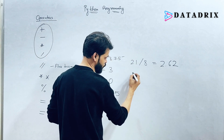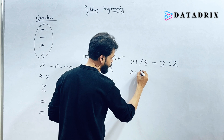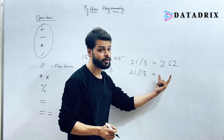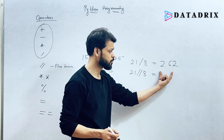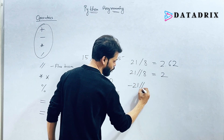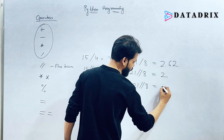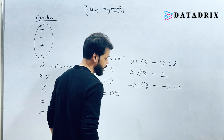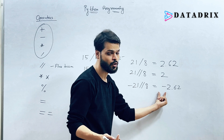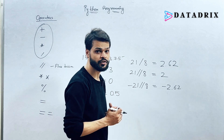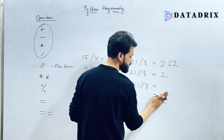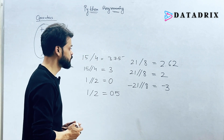For negative numbers with floor division, -21 // 8 gives approximately -2.62. Floor division gives the smallest integer, and between -2 and -3, the smallest integer is -3, because -3 is smaller than -2. So the answer would be -3.